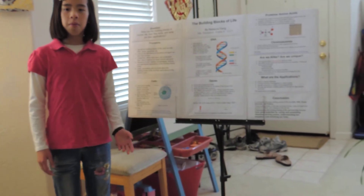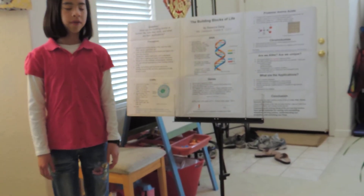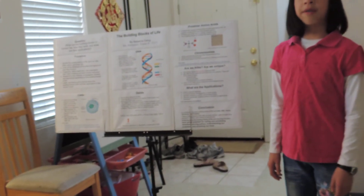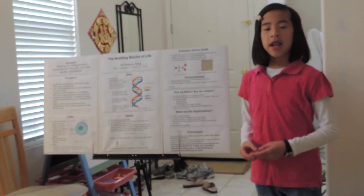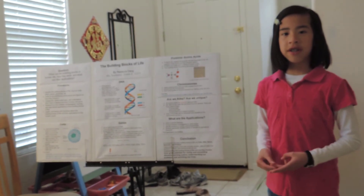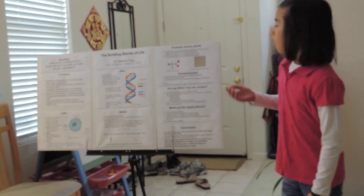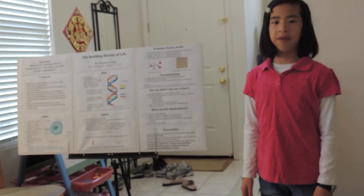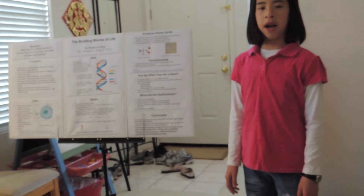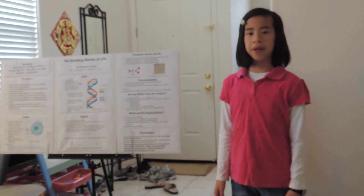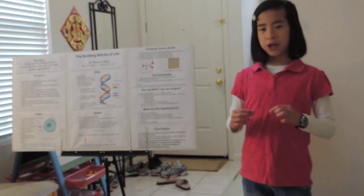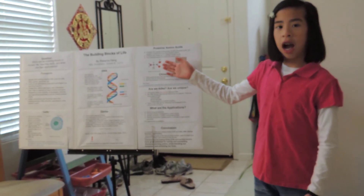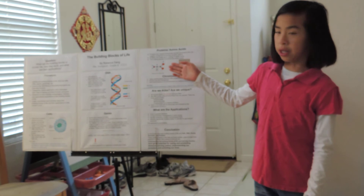Also, a genome is an organism's complete set of DNA. So far, we have talked about cells, DNA, and genes. What about proteins? Proteins are organic compounds essential to life. Organic compounds are ones that contain carbon. Proteins are made up of a string of amino acids. Here is a diagram of a particular amino acid.